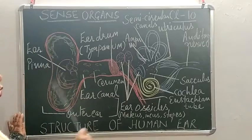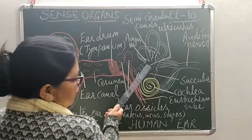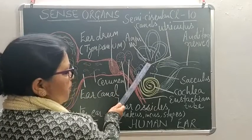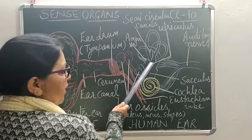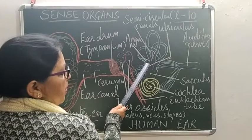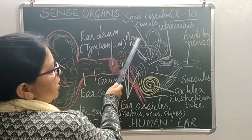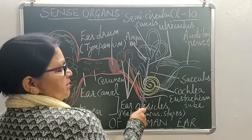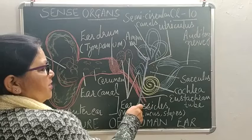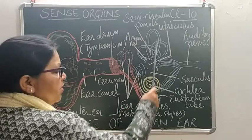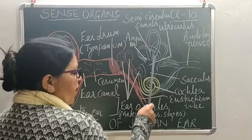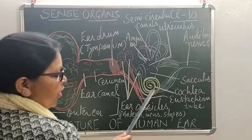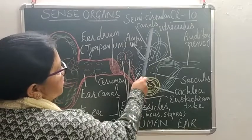Out of the three semi-circular canals, one is horizontal and two are vertical. The lower end of each semi-circular canal has a slightly wider part, and this wider part is known as the ampulla. The ampulla contains sensory cells for dynamic balance — meaning balance when the body is in motion.